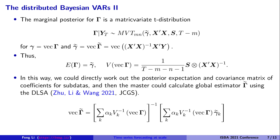In this way we can directly work out the posterior expectation and covariance matrix of the coefficients for different subsets, and then the master machine calculates the global estimator for gamma-tilde using our method, which we call DLC. This closed form is very useful because it reduces Bayesian computation — you can update sub-chunks of data and then assemble all the estimators.